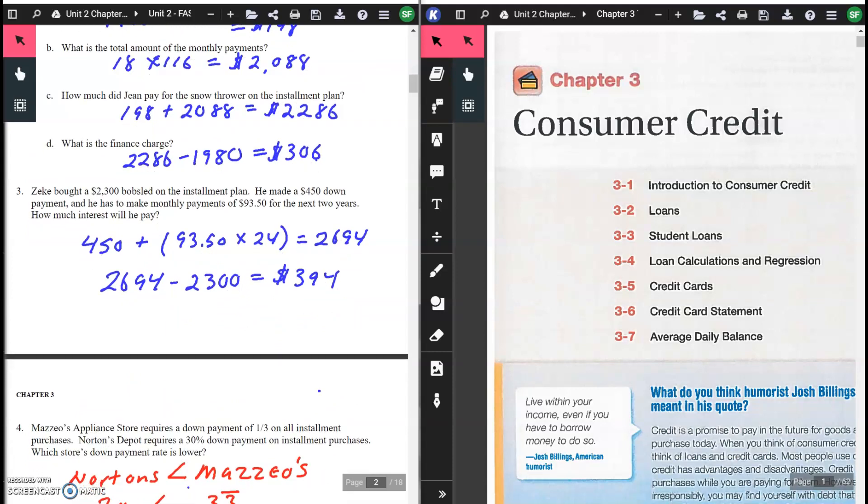Number three: Zeke bought a $2,300 bobsled on an installment plan. He made a $450 down payment. He has to make monthly payments of $93.50 for the next two years. How much interest will he pay? $450 down payment plus $93.50 per monthly payment times 24 pays because it's two years. Put that into the calculator just as you see it. Gives you $2,694. That's how much he paid at the end.